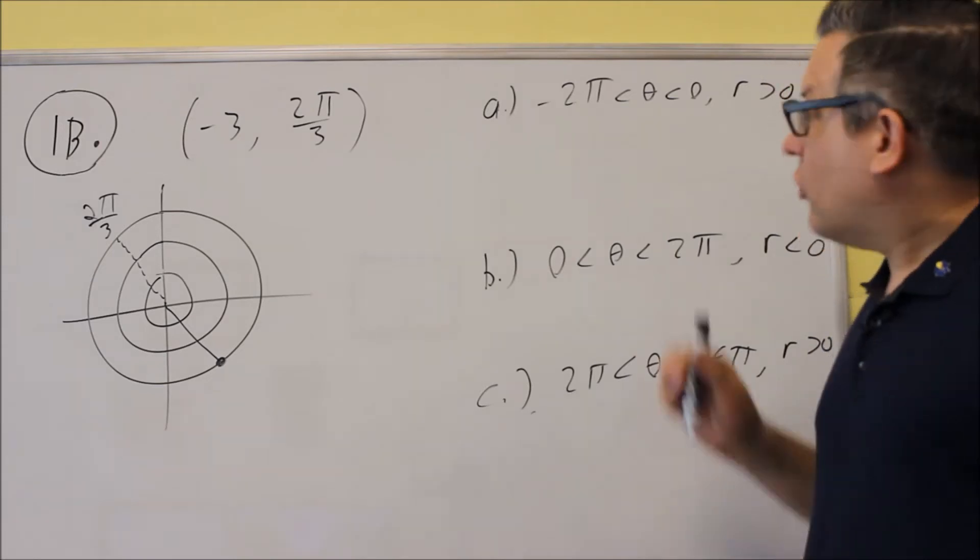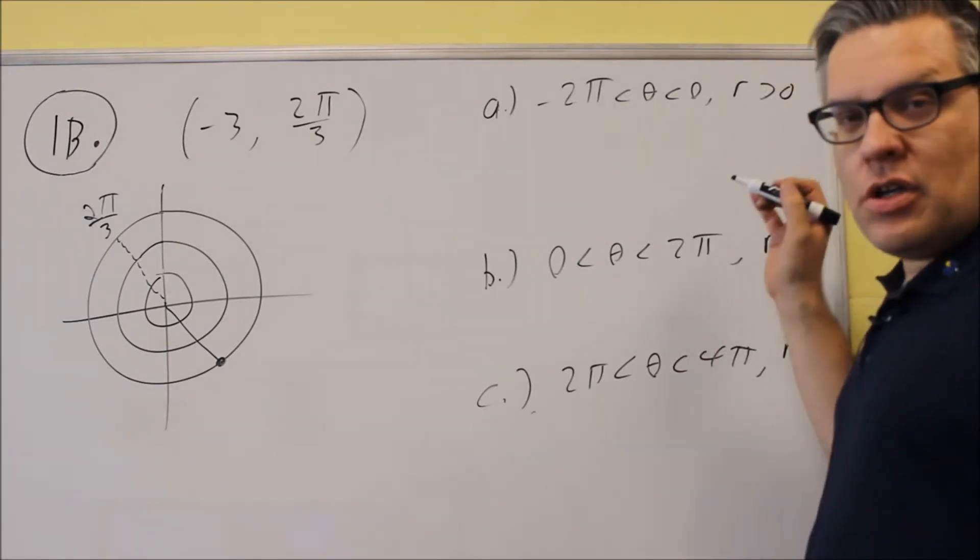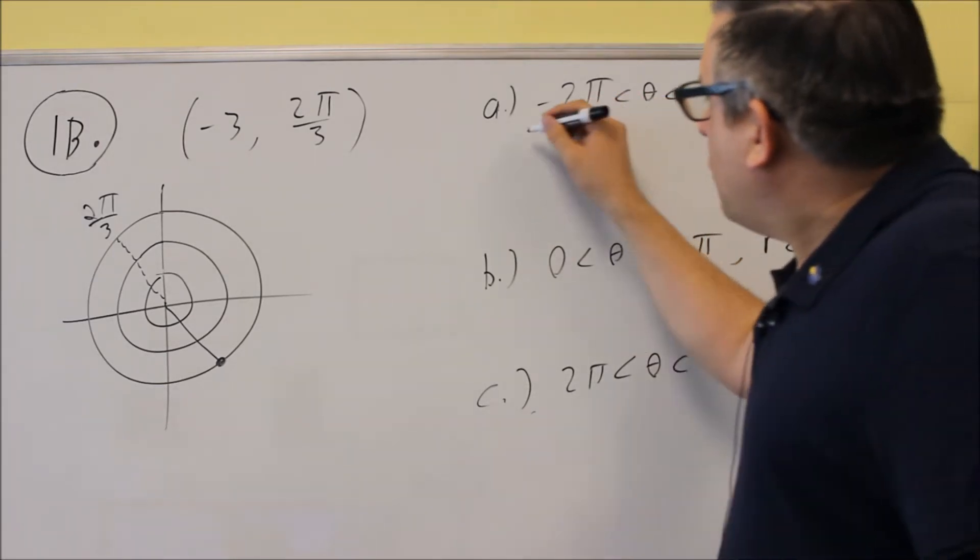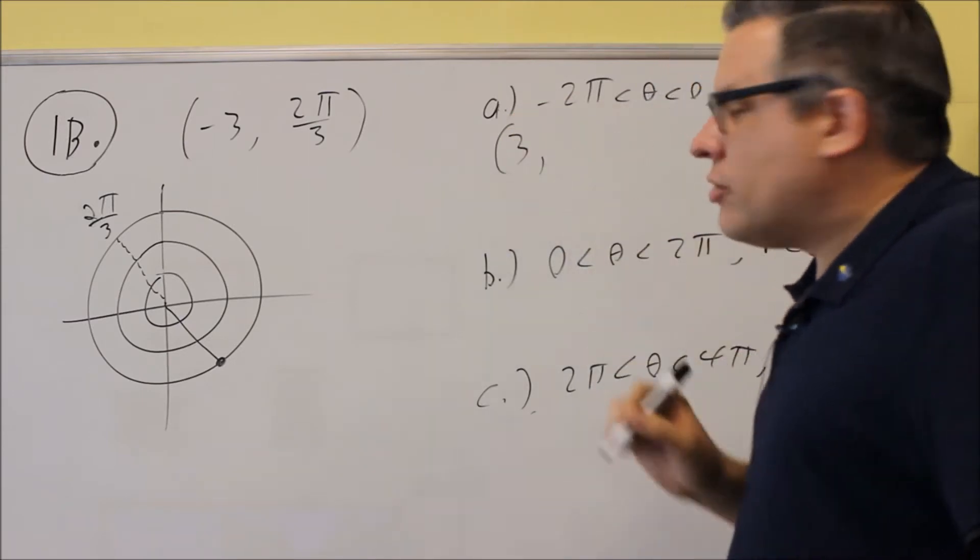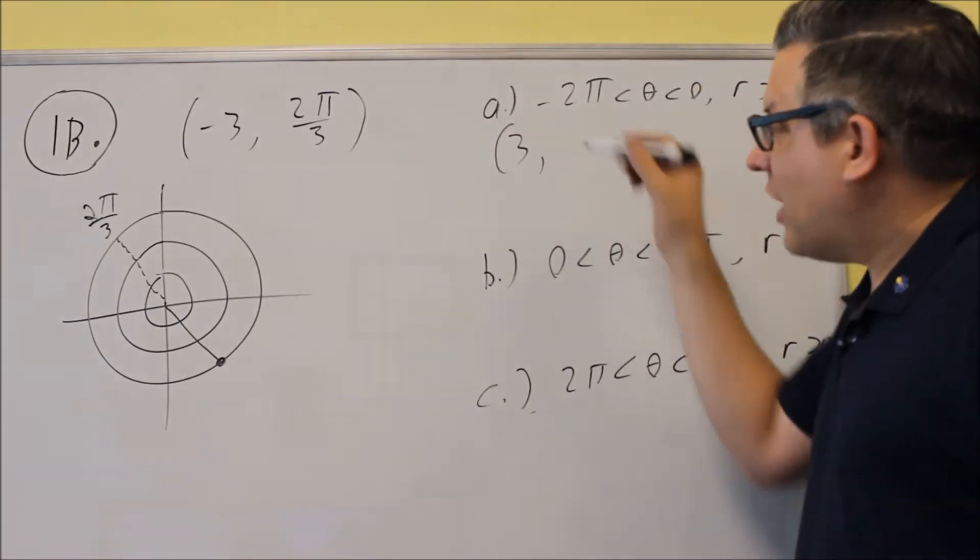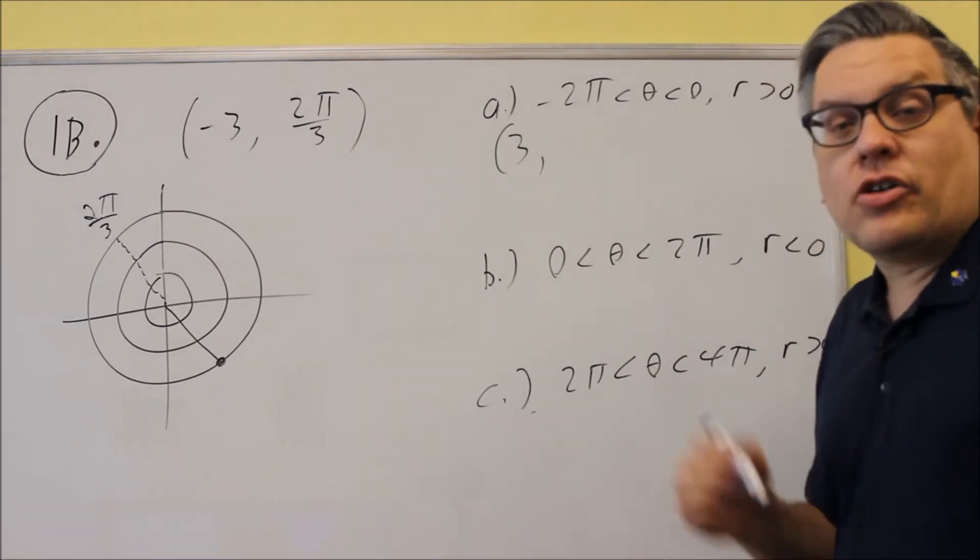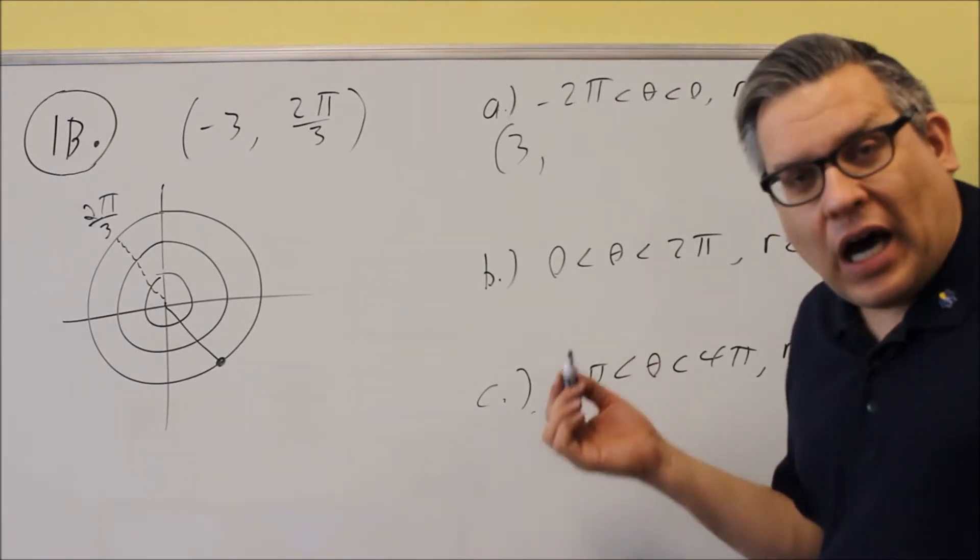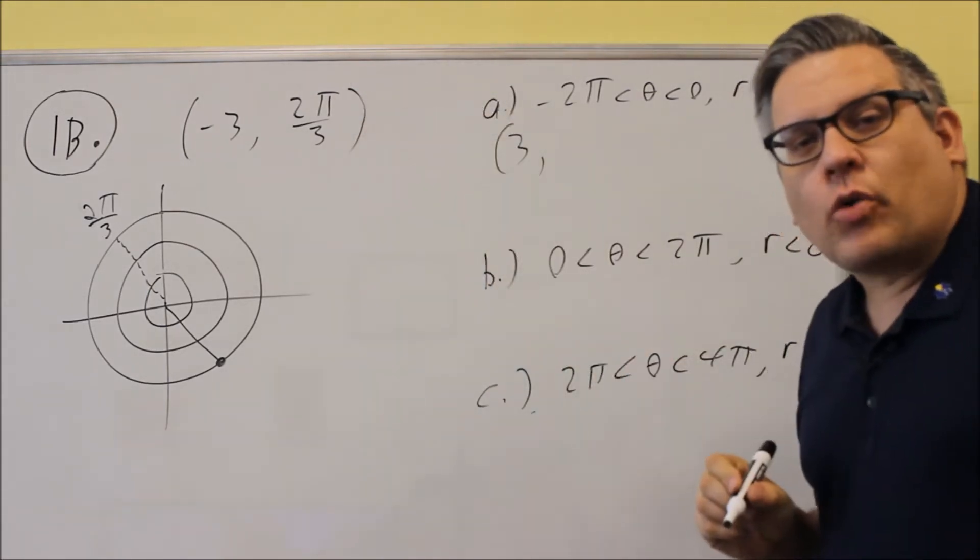The first one, we want to change the sign. Our r needs to be greater than 0, which means we need to change it from negative 3 into positive 3. Now when we do that, you have to add or subtract 180, which in this case we're going to use π since we're dealing with a radian measurement.